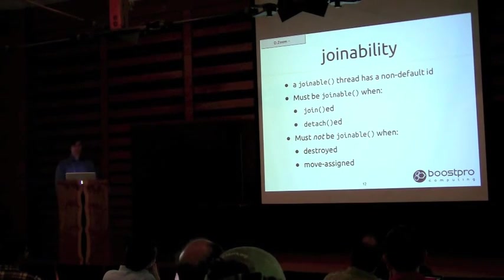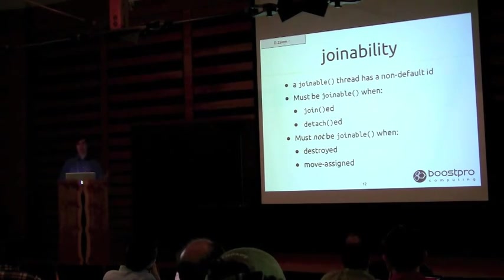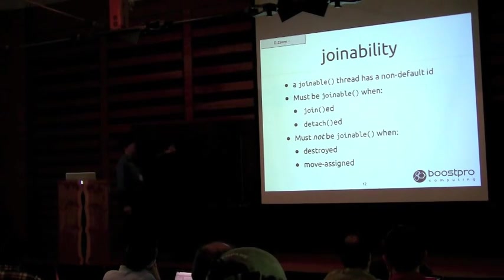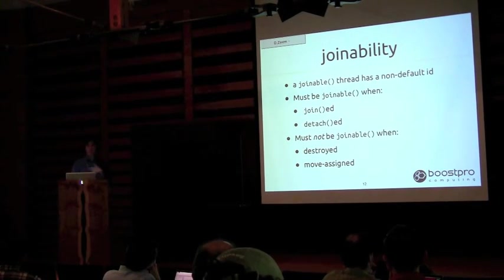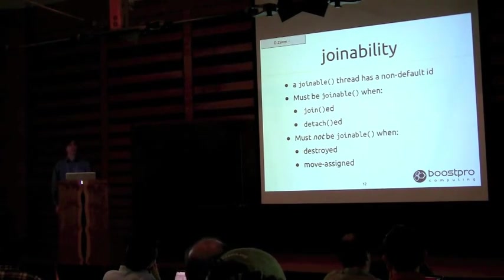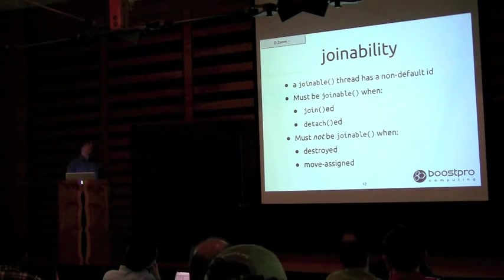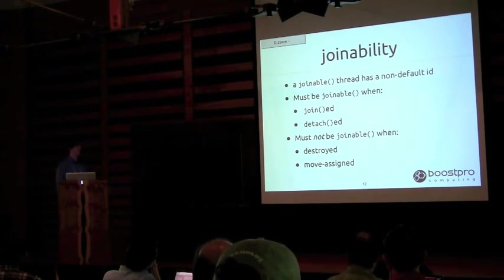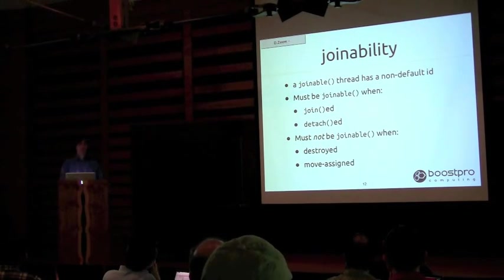What does it mean for a thread to be joinable? A joinable thread is one that has a non-default ID, meaning it has been started. You can think of it as an alive thread with some viable state you can inspect. A thread has to be joinable in order for you to join it or detach it. When you join it, you're saying 'I want to wait until you complete.' If you detach it, you're saying 'I don't care when you complete — go finish in your asynchronous world.' The thread cannot be joinable when it's been destroyed or moved.